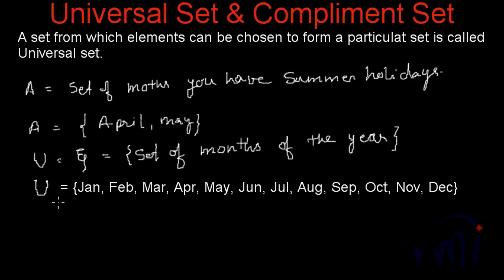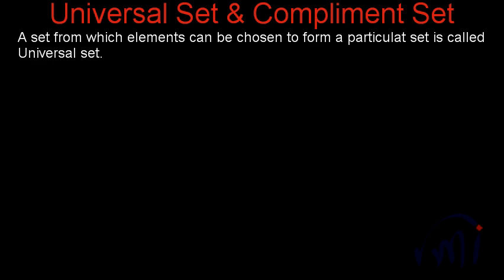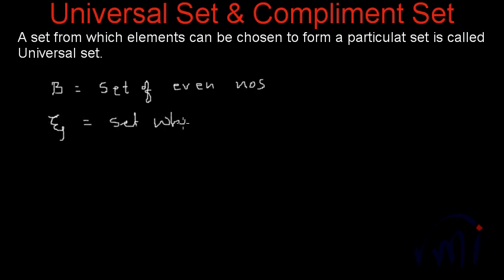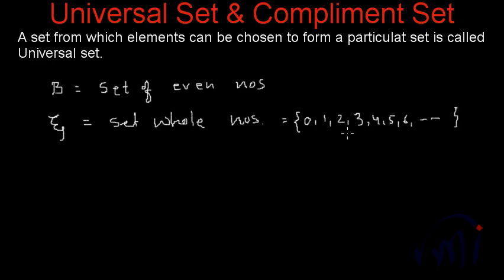Capital U can be confused with the union sign, which is why mostly we write it as psi. Now suppose I write a set B which is the set of even numbers. For this, the universal set will be the set of whole numbers. Set of whole numbers starts from 0 and includes all natural numbers: 1, 2, 3, 4, 5, 6 and so on. All even numbers like 2, 4, 6 belonging to set B can be drawn from the set of whole numbers, so B is a subset of this universal set.